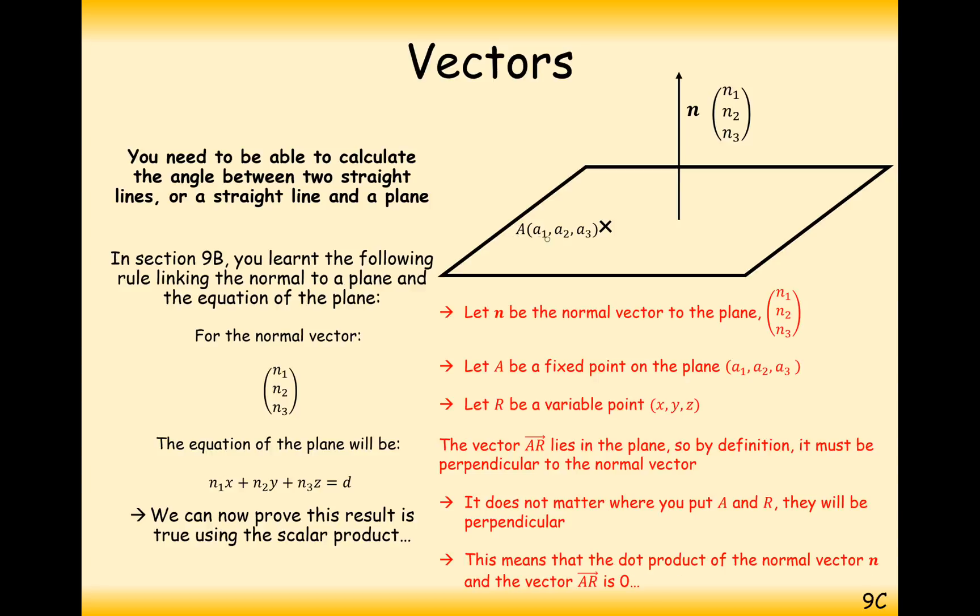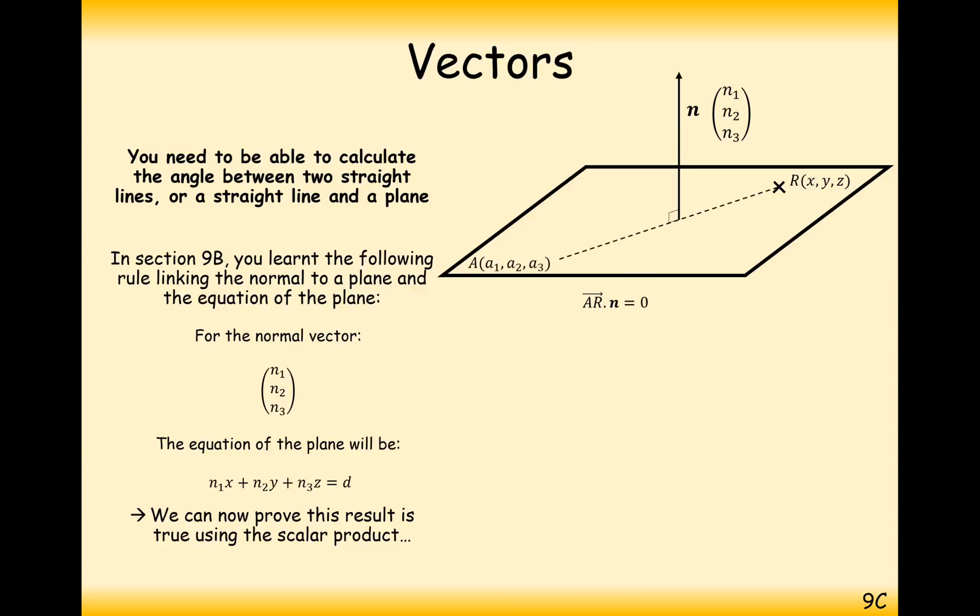If we set a as this coordinate here and r as this coordinate here, and we connect the two together, then the direction vector from a to r will be perpendicular to the direction vector of n. And the two dotted together will give us a 0, no matter where we put it.